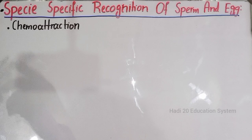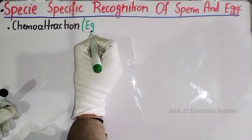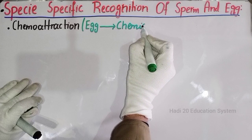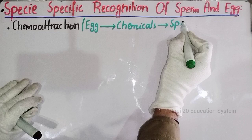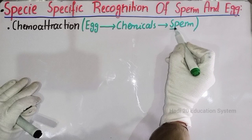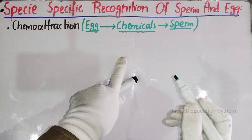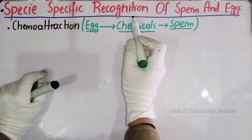The egg will release a special chemical. Now we will talk about external fertilization. So this is the basic step of sperm and egg cell recognition.